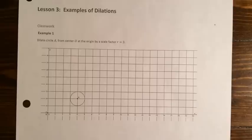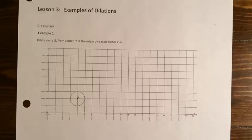In this lesson, lesson three, we're going to see some more examples of dilations. We're going to look at circles and ellipses and see what happens when we dilate those by a scale factor. And we're going to look at how we can undo a dilation. If we dilate a figure with a scale factor of R, how can we get it back to its original size?